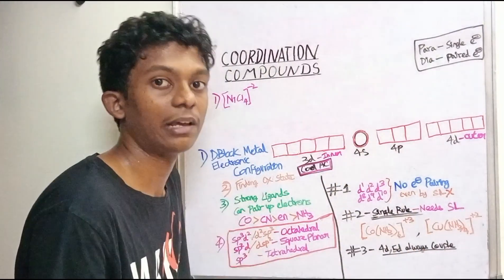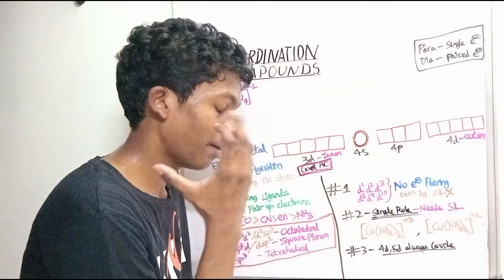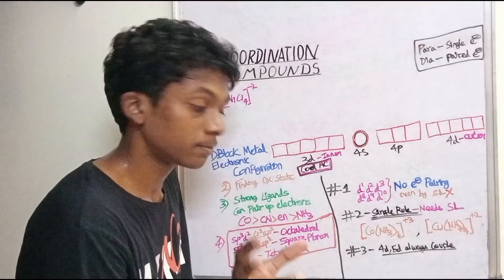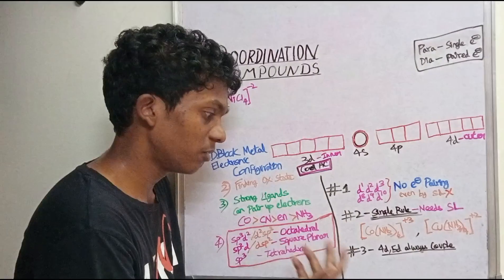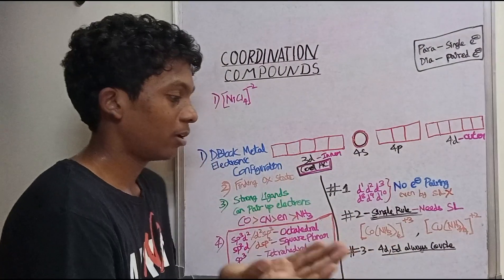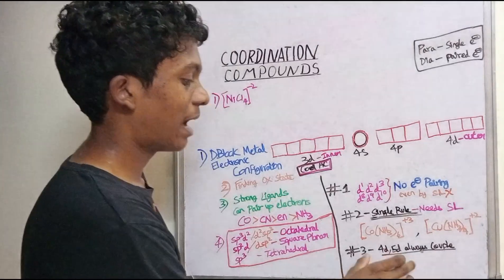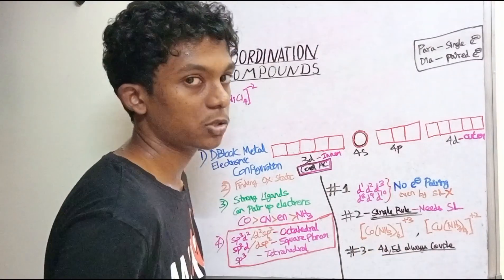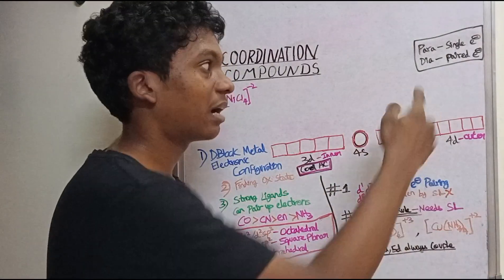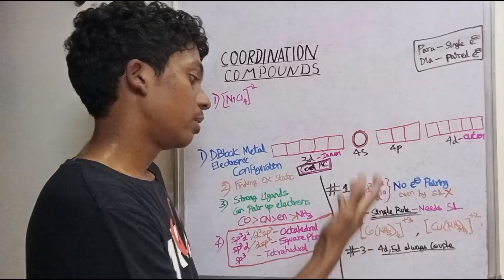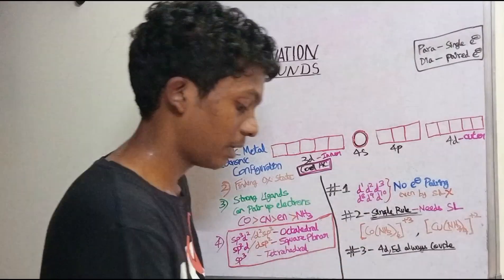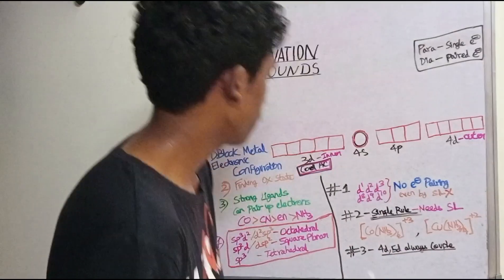Whether the ligand is strong or weak, electrons are always paired in 4D and 5D metals. So if a Platinum complex is given, it is most likely diamagnetic because the electrons are paired. That is what you have to remember. These are the tricks and rules. Now let's solve the examples.